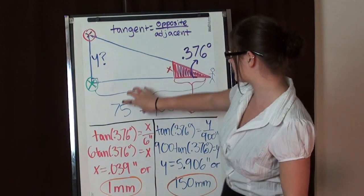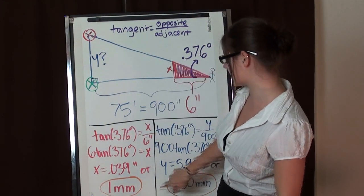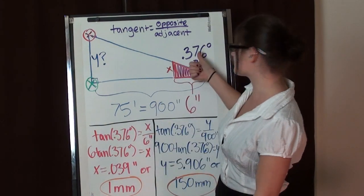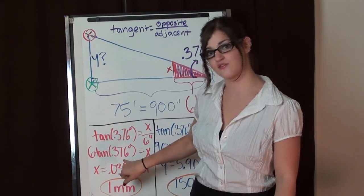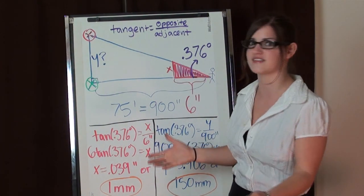Now I've got the math for the barrel. As it turns out this distance right here using this angle is 0.039 inches which is only one millimeter. That's pretty negligible. Well, it would seem.